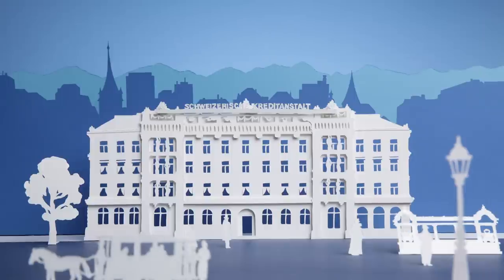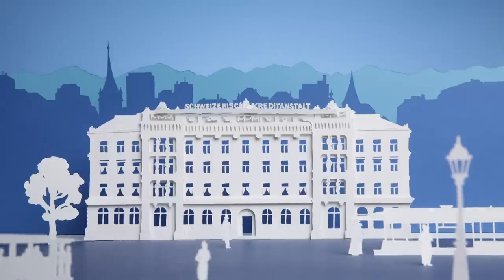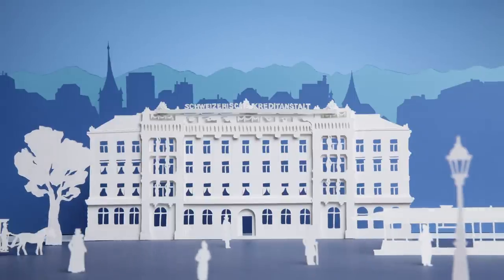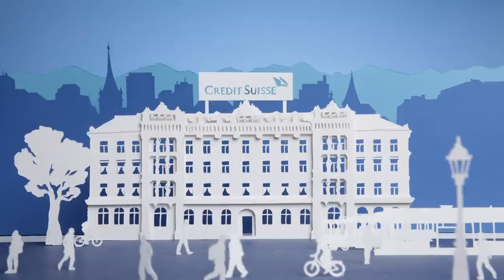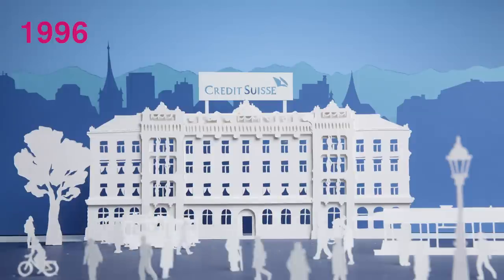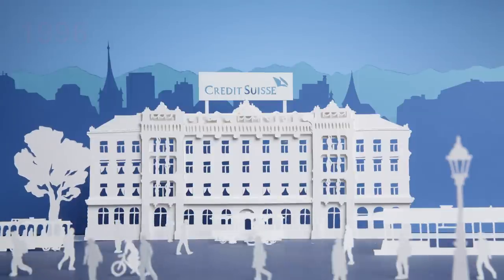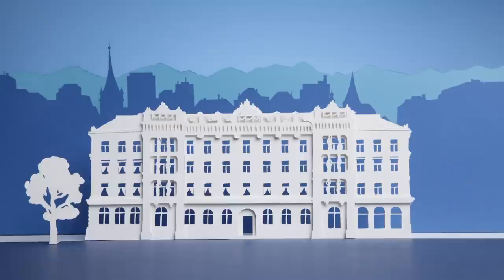It was through this work as a credit intermediary, the most basic function of any bank bringing together borrowers and savers, that the SKA, which later became Credit Suisse, contributed to establishing and shaping Zurich and Switzerland as the financial center it is today.